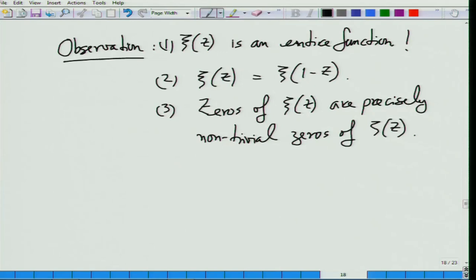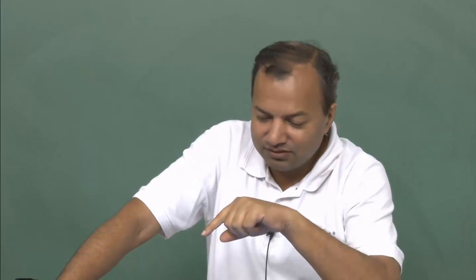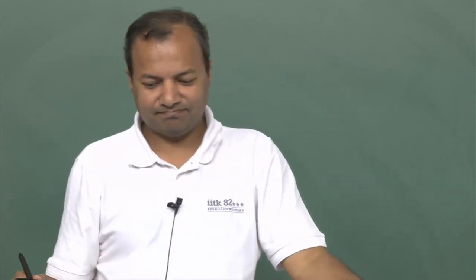Xi is an entire function, which is very good. Another nice observation — which we will not be using — is that xi is perfectly symmetric along the real z equals one-half line: xi of 1 minus z equals xi of z, which follows from the functional equation. The first observation is going to be important because we know that entire functions can be written in terms of their zeros. So we will have to worry about where the zeros of xi are, and those zeros are precisely the non-trivial zeros of zeta. We will study xi to derive facts about those non-trivial zeros, and that is our next task. We are done for the day.